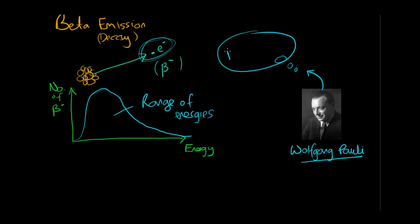He suggested that there was a new particle called the neutrino. And that the neutrino carried away the balance of energy that the decay gave out so that the total amount of energy was the same.